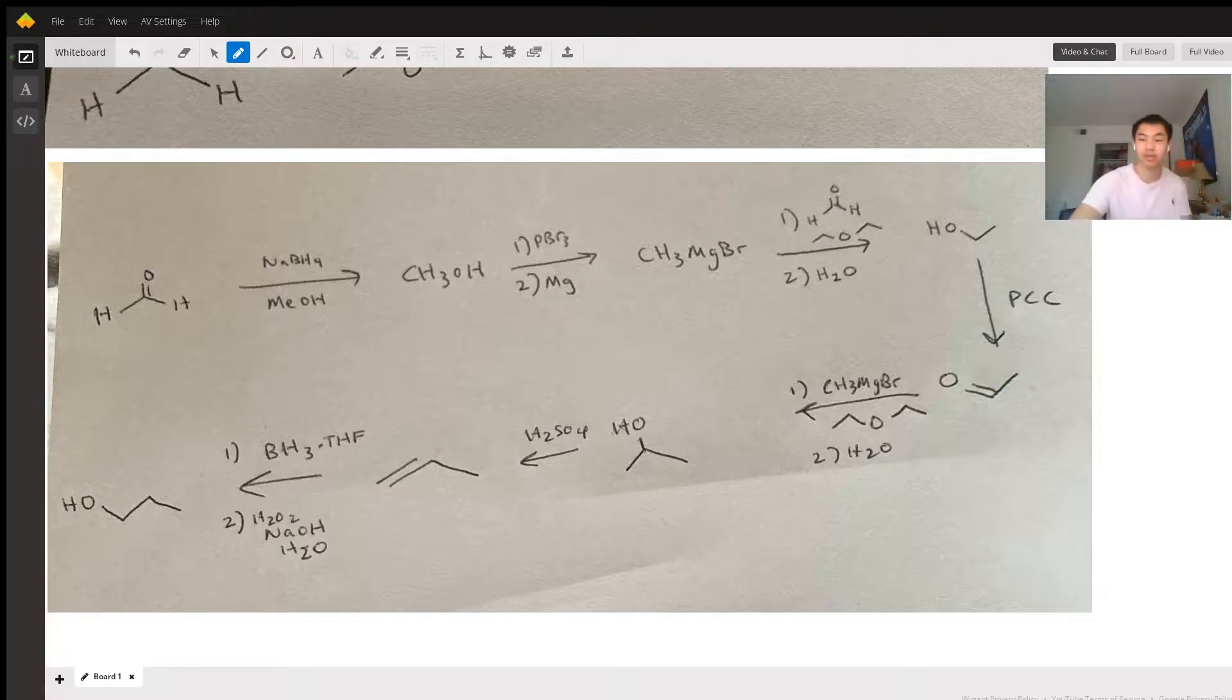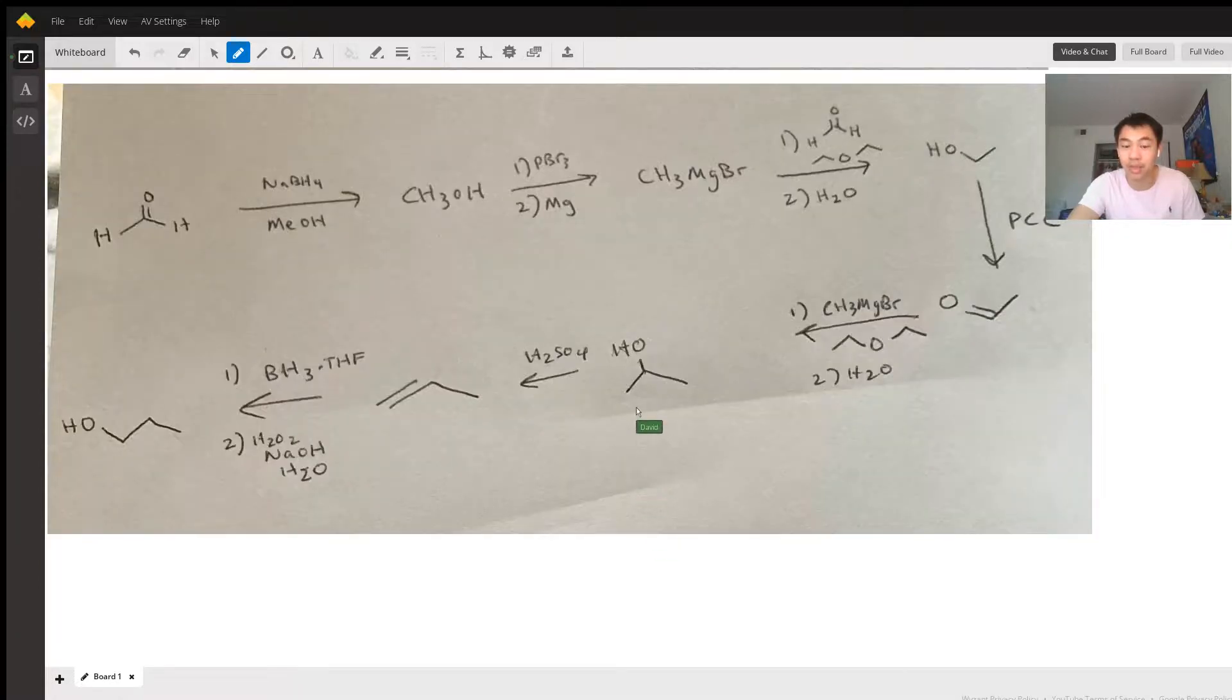So we need to do this Grignard reaction again. I use PCC to turn this back into an aldehyde and run that Grignard reagent again. You add another CH3 onto the backbone to get propanol.